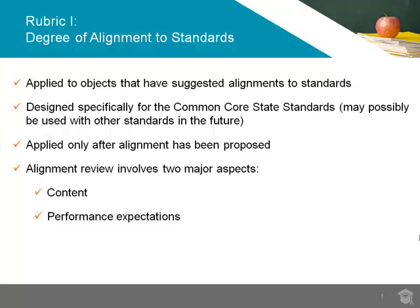Rubric 1 is applied to objects that can be aligned to standards, and it is used to rate the degree that an individual object aligns to a proposed standard. While this rubric could be used with any set of standards, it was specifically designed for the Common Core State Standards, which are the standards you can use to align objects in the OER Commons website.